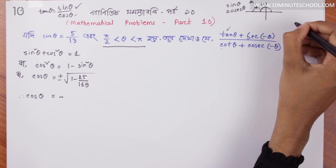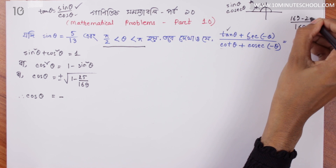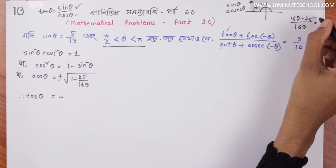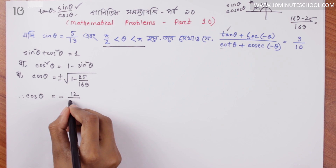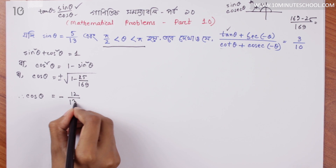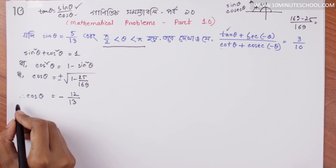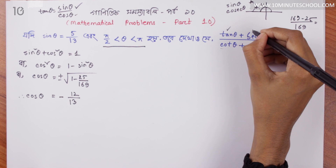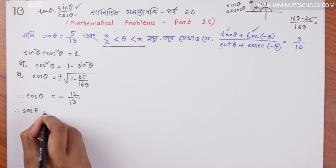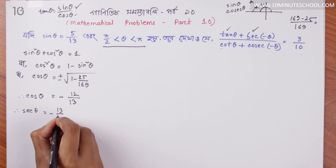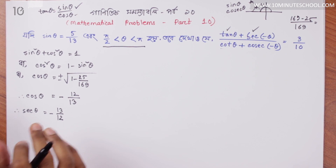To calculate cos θ, we compute: 169 minus 25 equals 144, and √144 = 12, since √169 = 13. So cos θ = −12/13.